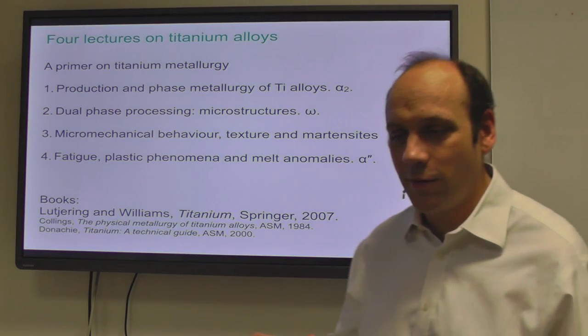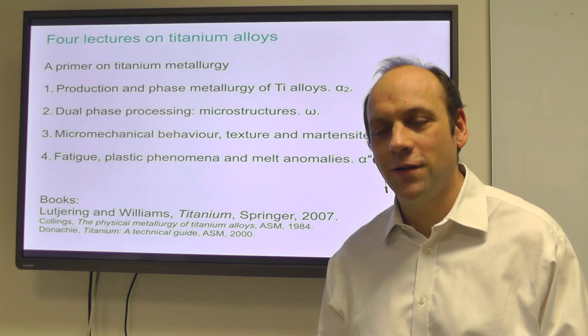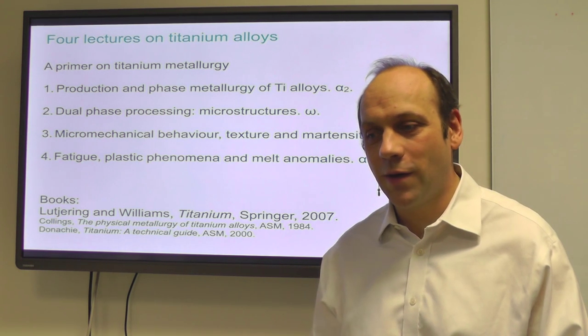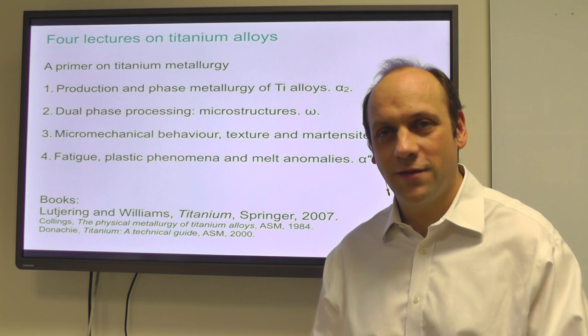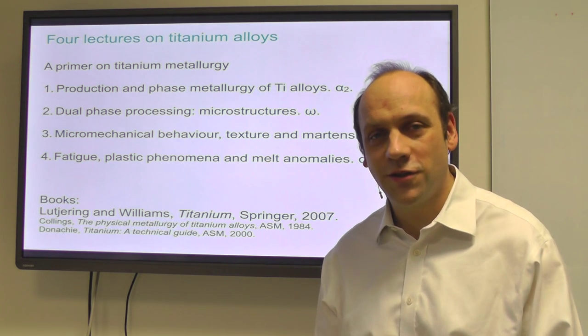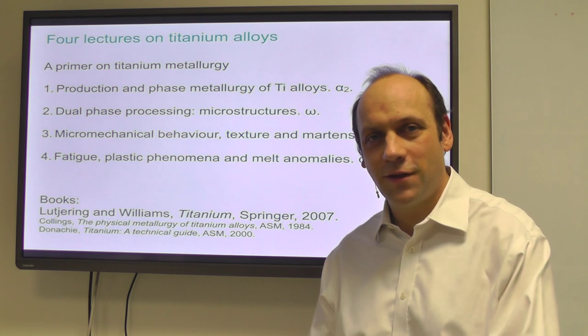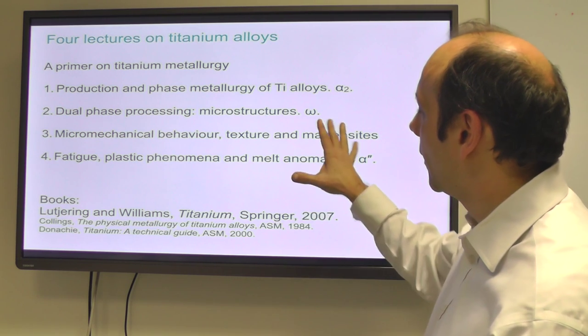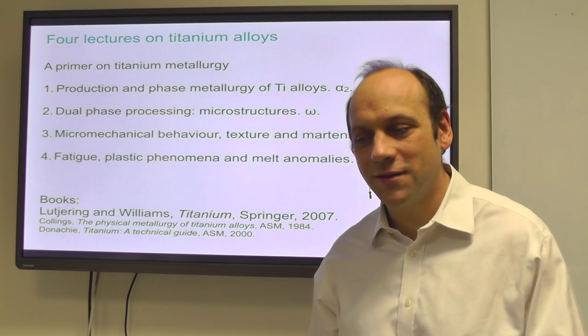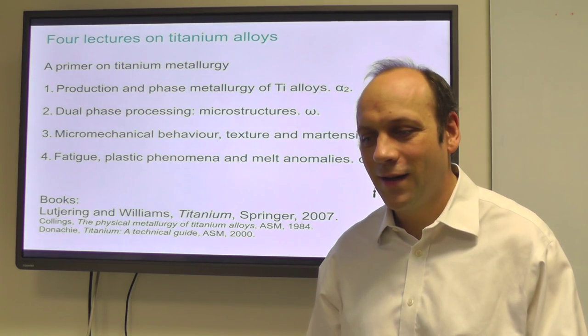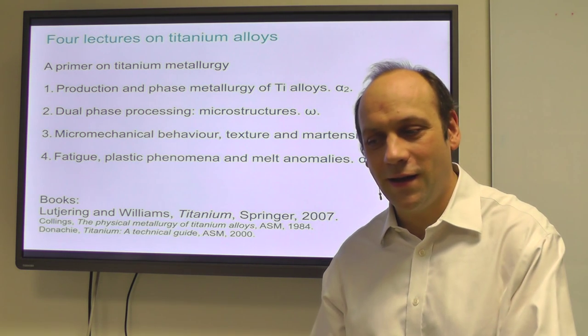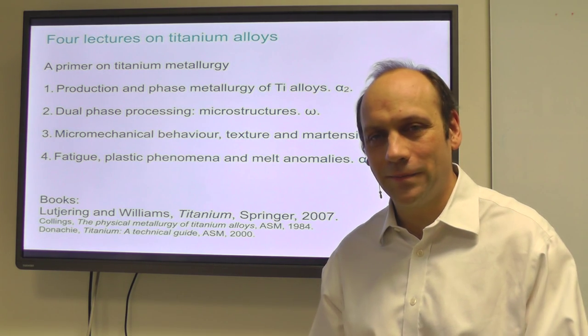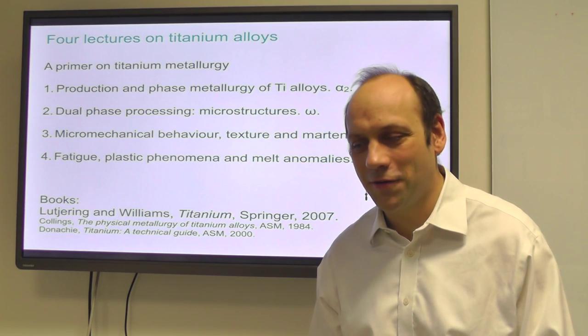In these four lectures we're doing a primer on titanium metallurgy. In this first one we'll look at the production of titanium, the phase metallurgy of titanium alloys, and the alpha-2 phase. In the second lecture we'll talk about processing in the alpha-beta region, dual-phase processing, the microstructures we can produce, and the omega phase. In the third lecture we'll talk about texture, martensites, and micro-mechanical behaviour. The fourth lecture covers fatigue, plastic phenomena, melt anomalies, alpha-double-prime in near-beta alloys, and so on.